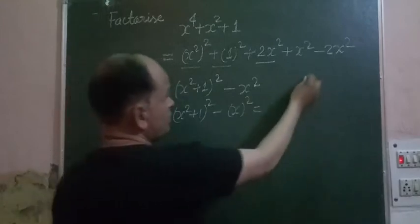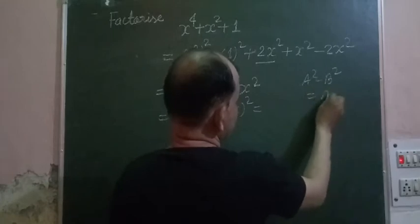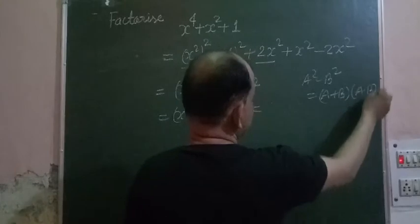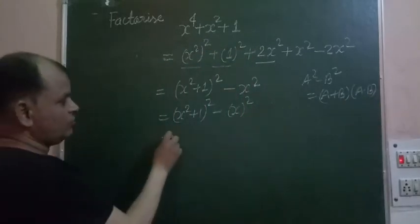So we use the identity a squared minus b squared, which is a plus b into a minus b. Now we put this identity and find the factors of the given expression.